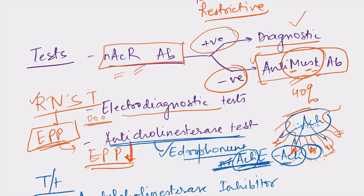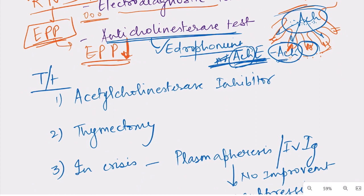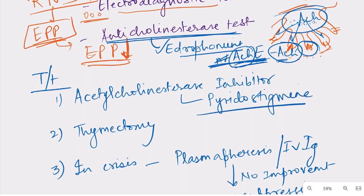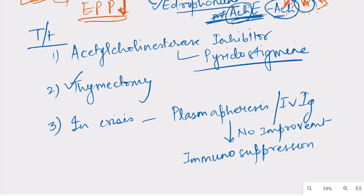For treatment, since letting acetylcholine accumulate in the synaptic cleft improves muscle action, the first treatment is an acetylcholinesterase inhibitor. For ongoing treatment we need a longer-acting drug — not like edrophonium — so pyridostigmine is used. In generalized myasthenia gravis, where most muscles including the respiratory system are affected, thymectomy is recommended.